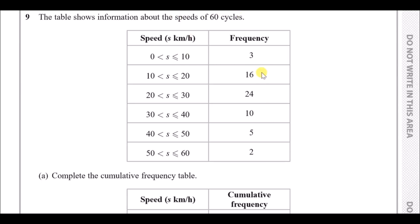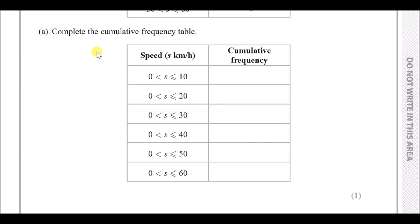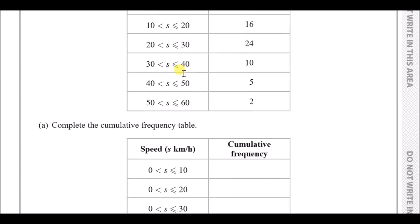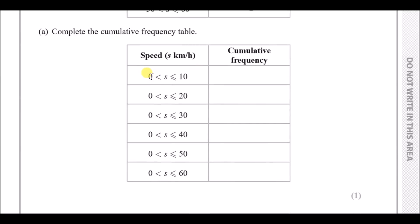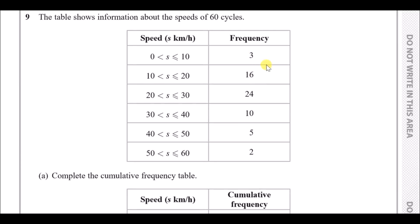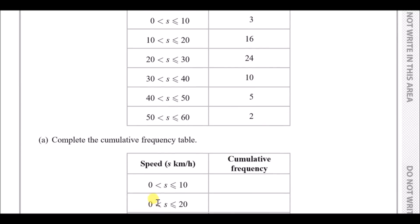Number nine: the table shows information about the speeds of 60 cyclists. For example, 3 cyclists went at 0–10 km/h and 2 went at the top speed of 50–60 km/h. Next, complete the cumulative frequency table. The speeds now accumulate: instead of 0–10, 10–20 separately, they run 0–10, 0–20, and so on — meaning we add the frequencies as we go along.